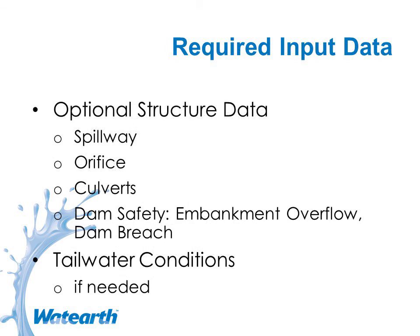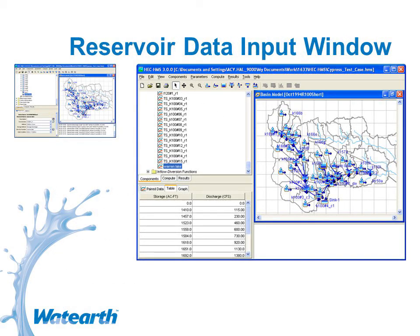There are some dam break options we'll touch on briefly later today. There are also tailwater conditions if needed, and we'll talk about those. The reservoir or detention basin data gets entered with paired data — like the elevation-storage relationship or any storage-discharge relationship. If you're entering fixed tailwater, it gets incorporated right in the detention basin or reservoir data. If you're using a stage or tailwater hydrograph, that is time-based, so it goes in as time series.